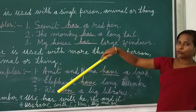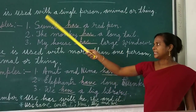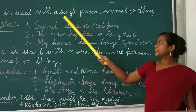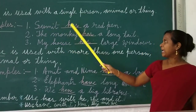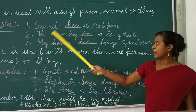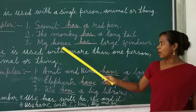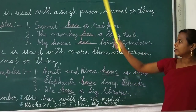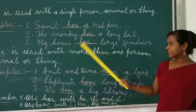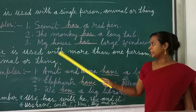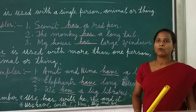I'll repeat — where to use 'has' and where to use 'have' in sentences. 'Has' is used with a single person, animal, or thing. Examples: Sumit has a great thing. The monkey has a long tail. My house has — we use 'has' here. 'Have' is used with more than one person, animal, or thing — more than one person.